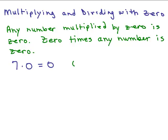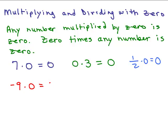What if we had zero times three? That equals zero — zero times the number is still going to be zero. What if you had a fraction, one-half times zero? That's still going to be zero. And if you know about negative numbers, what if you had negative nine times zero? That's also going to be zero. What if you had zero times zero? That's also going to be zero. What if you had zero times negative one? That's also going to be zero.